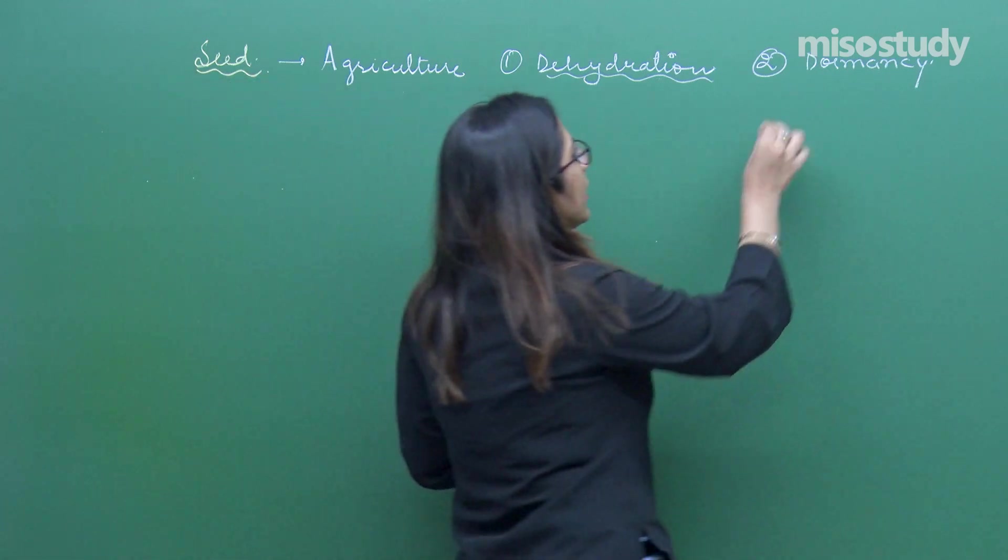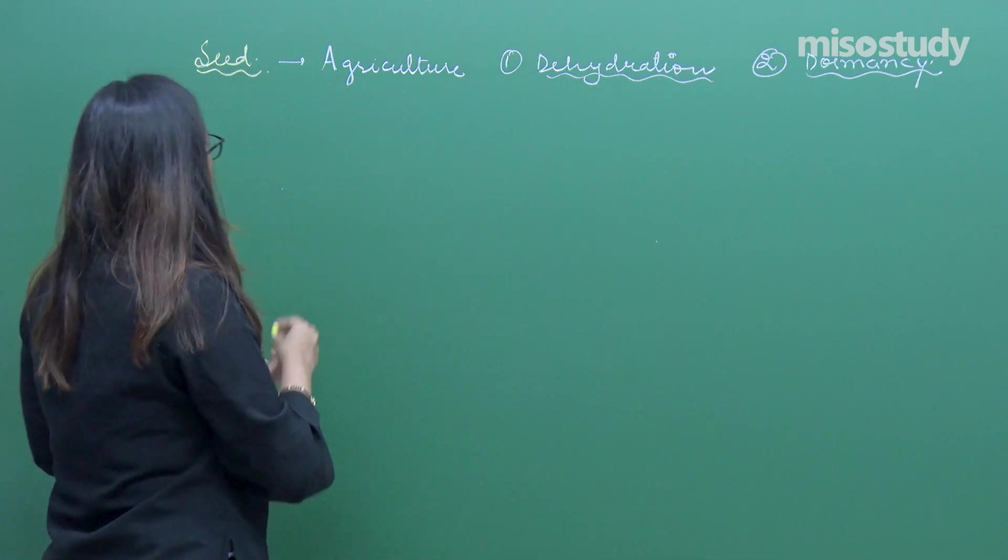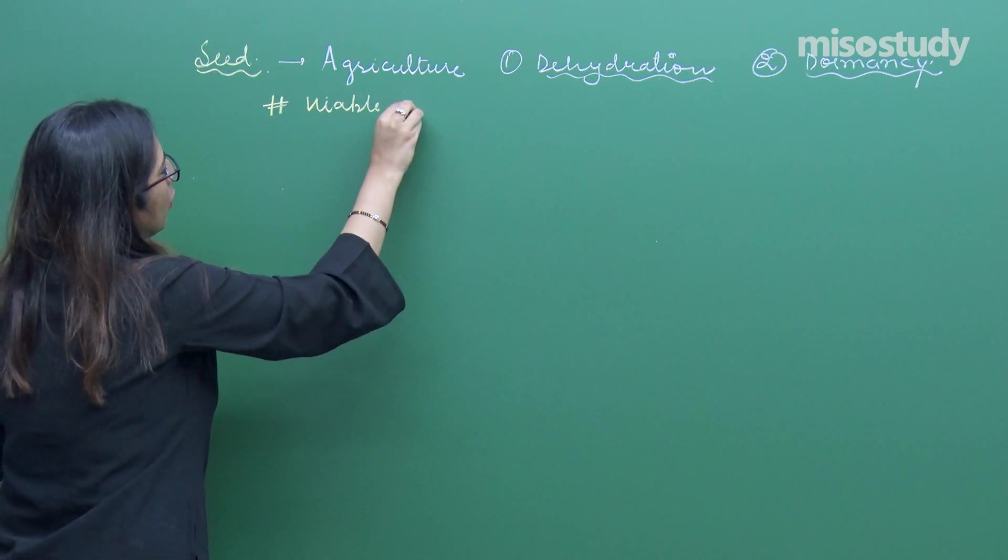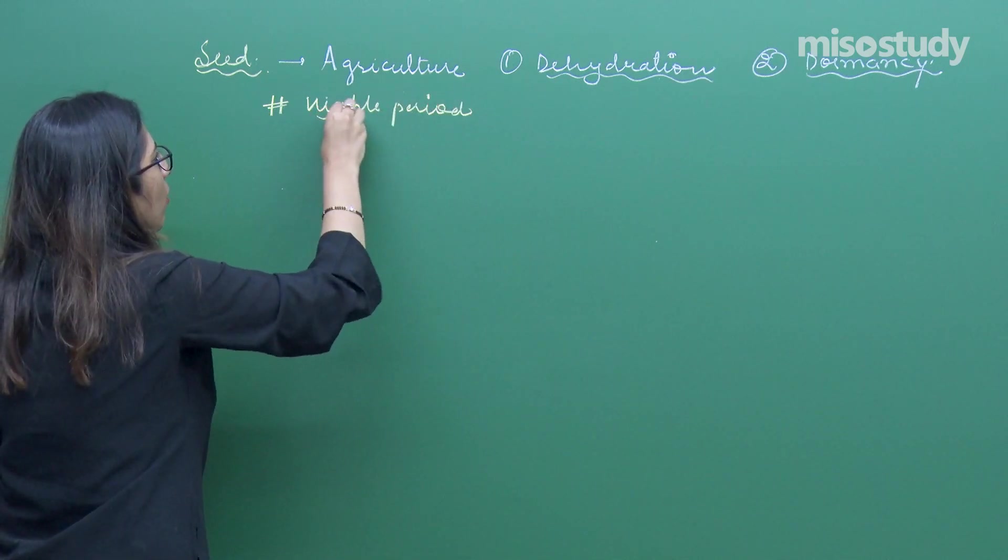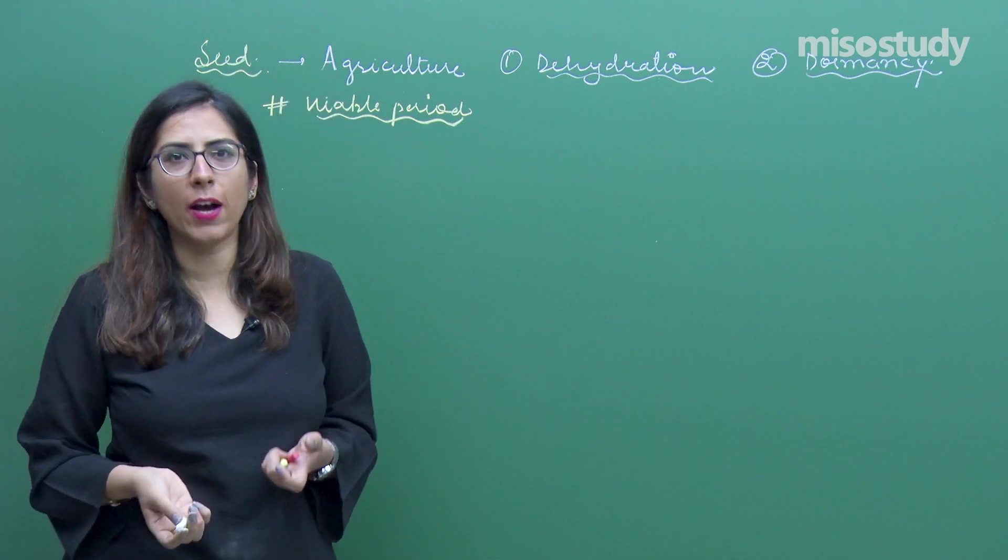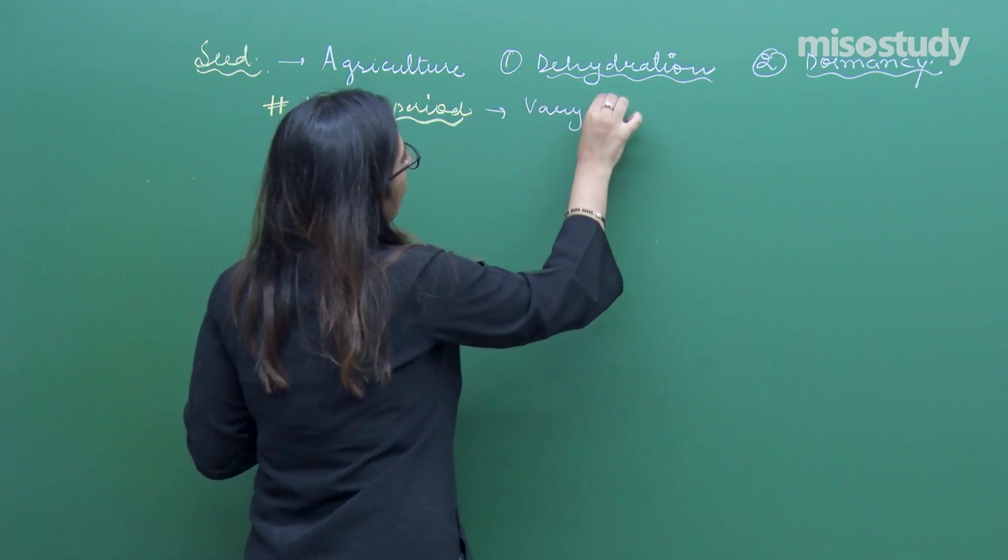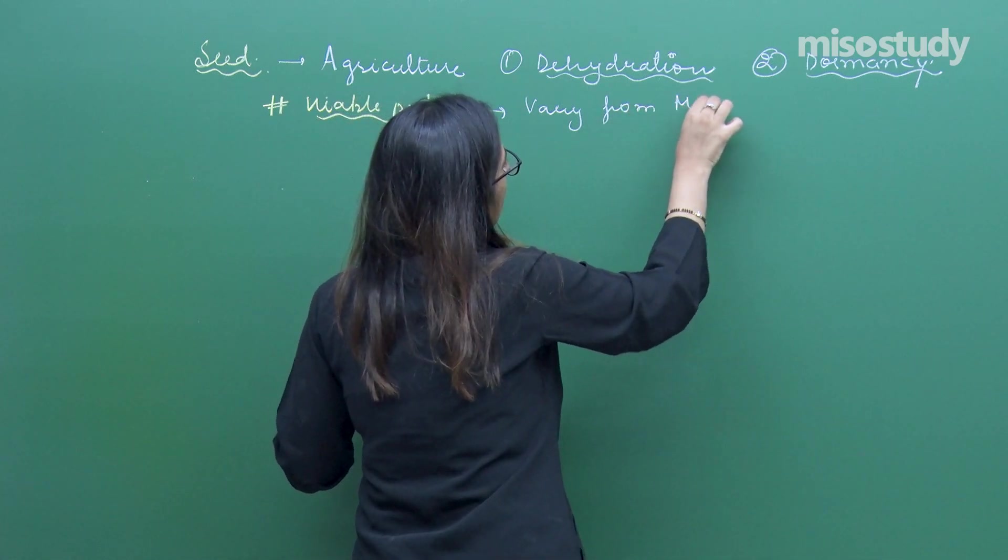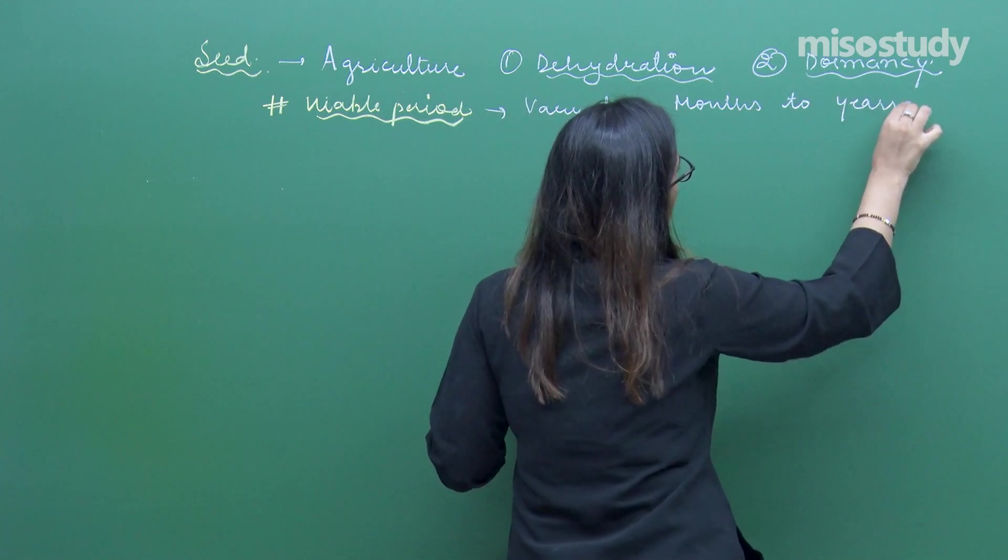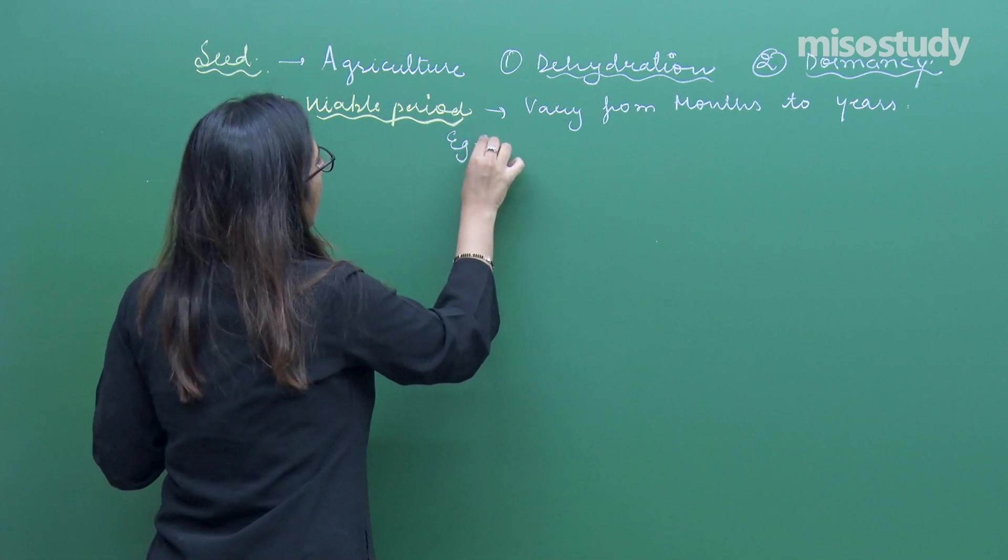Because of these, the seed can remain viable for a very long time. Every seed has a viable period. Viable period varies from one species to another species. This is that period in which the seeds remain viable and can easily grow into a new plant. They vary from months to years.